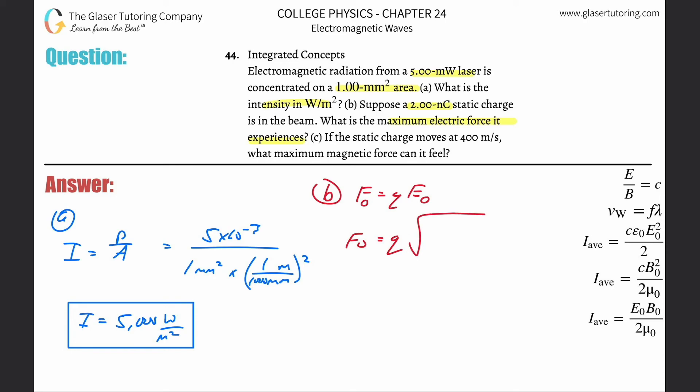This will be the square root of 2I over C times the permittivity of free space. The charge here is 2 nanocoulombs, so that's 2 times 10 to the minus 9 multiplied by square root of 2 times the intensity, which we just found was 5,000, all divided by speed of light, which is 3 times 10 to the 8 multiplied by the permittivity, which is 8.85 times 10 to the minus 12.